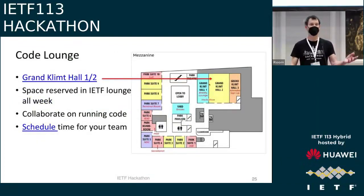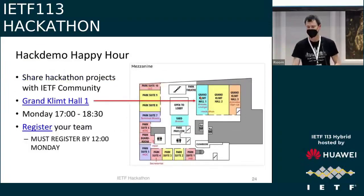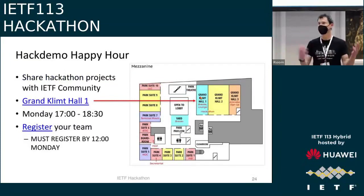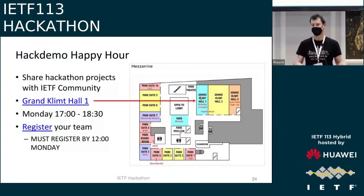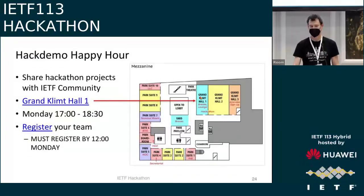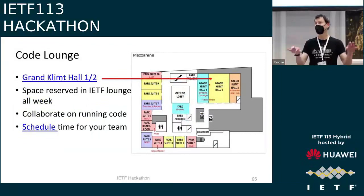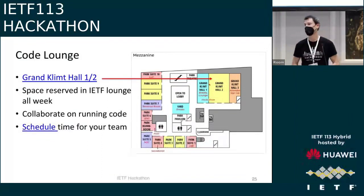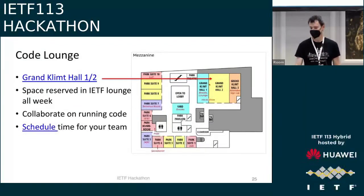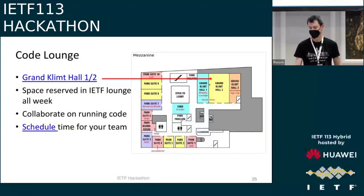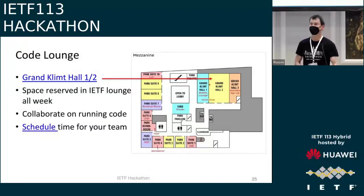The code lounge will be here in this space — part of the Grand Klimt Hall rooms one and two. All throughout the week, you'll be able to come here, sit down at a table, access power, and work on code. It's not limited to the hackathon weekend. You can come anytime and use this space to meet with your team. You can also schedule time through a link on the wiki to help coordinate.